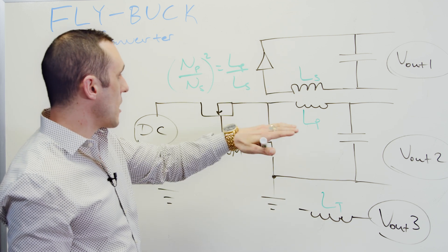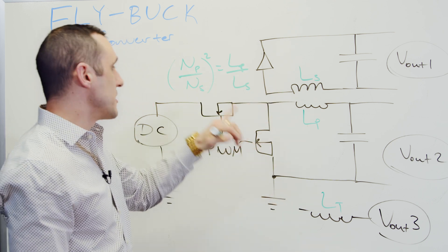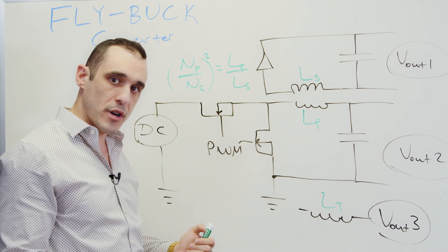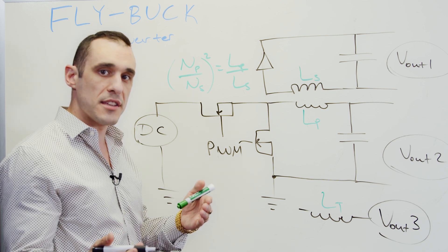Because you need very precise coupling with these different turns ratios between all of these different rails, this generally requires a custom transformer. So you're not normally going to find something off the shelf that is just going to work so easily.